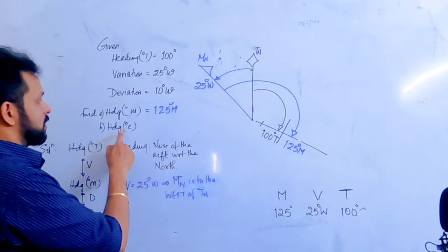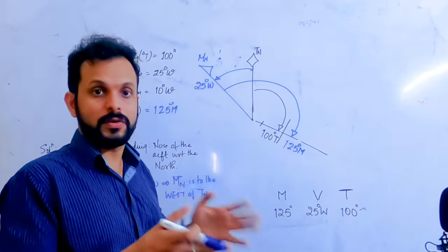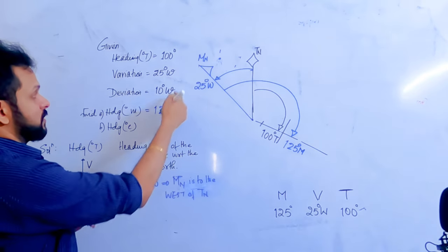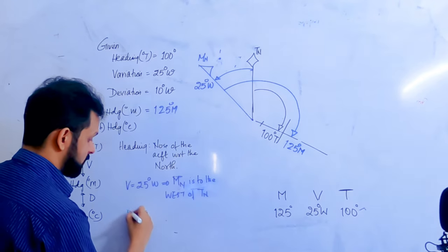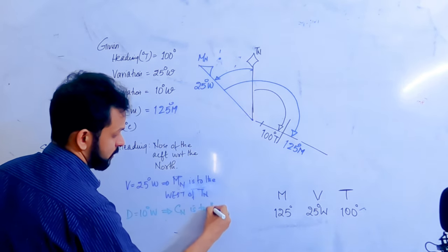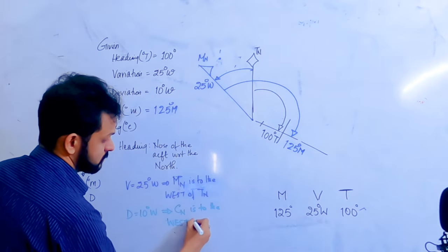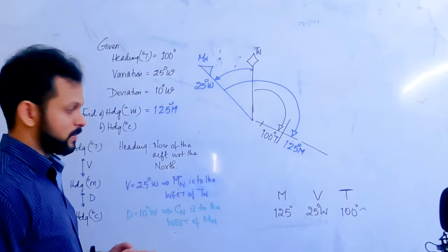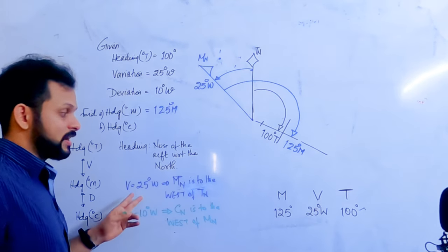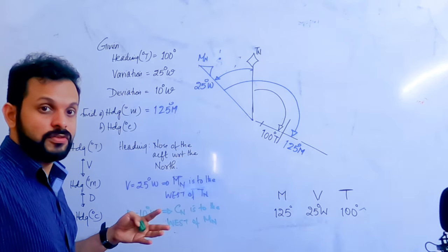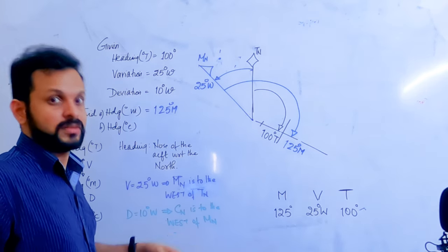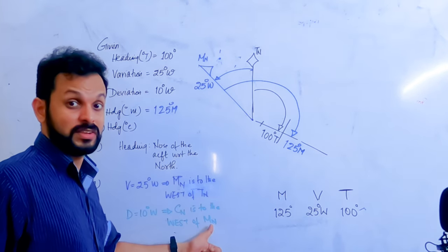To find compass heading, the reference is compass north, so we need to mark compass north. Deviation is 10 degrees west, meaning compass north is to the west of magnetic north. A helpful way to think about it: variation relates to true north, while deviation is an error in the magnetic value — so magnetic north is the reference for deviation, and compass north is 10 degrees west of magnetic north.